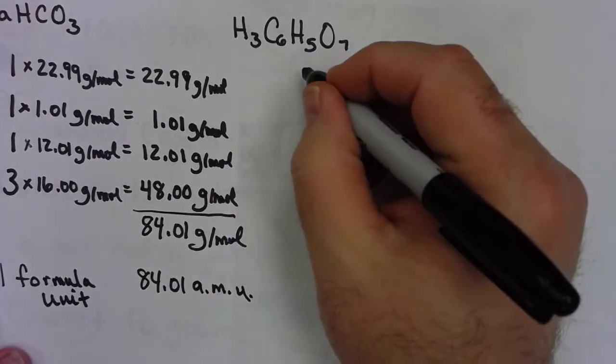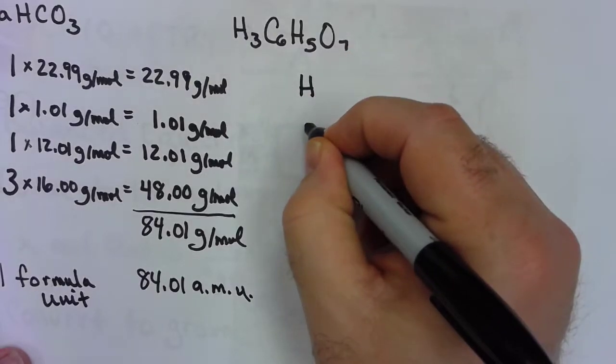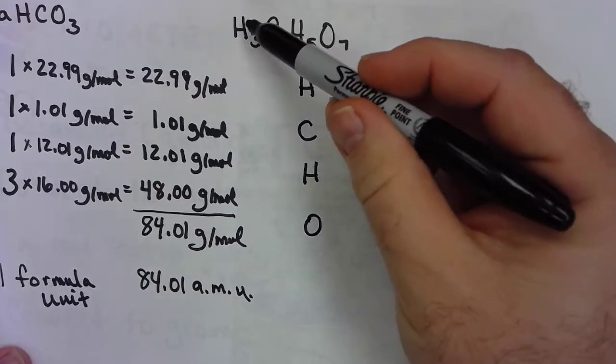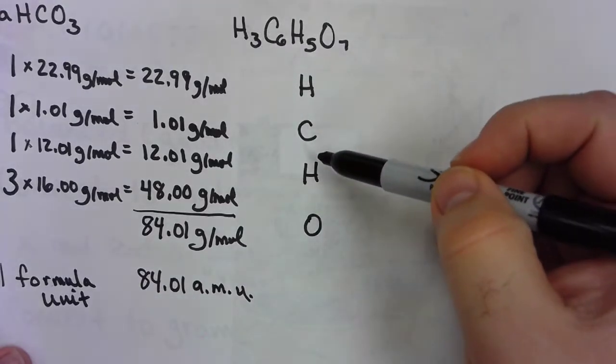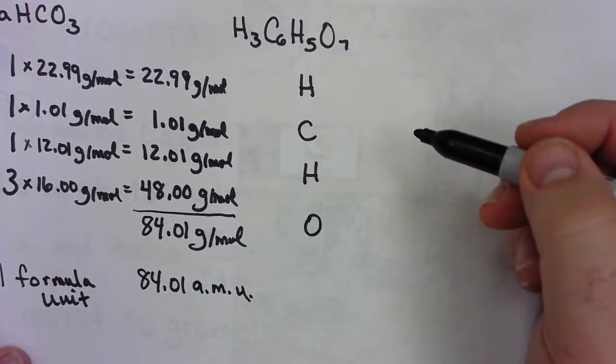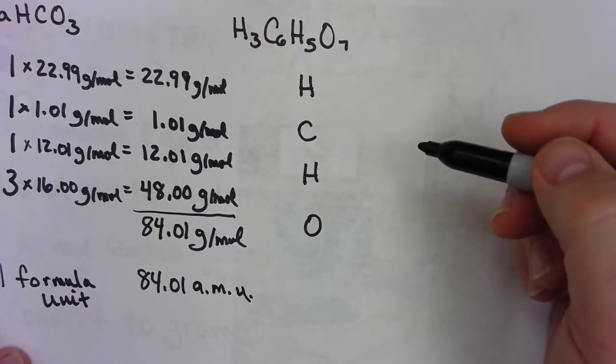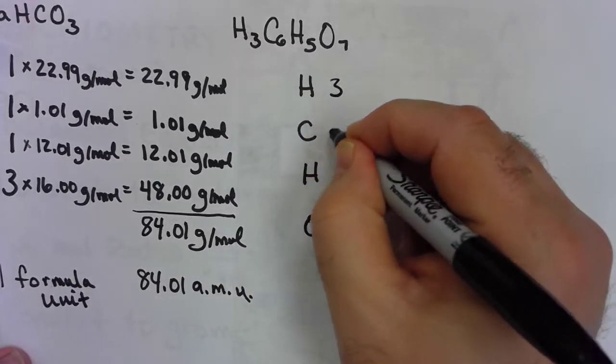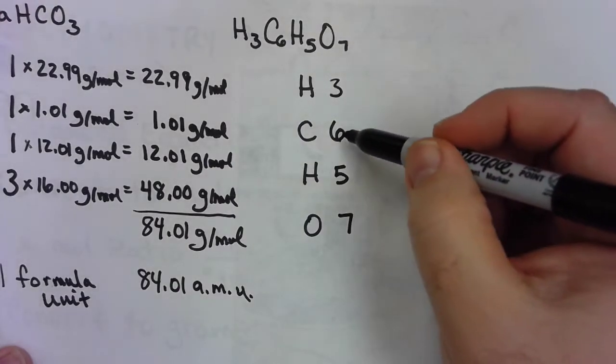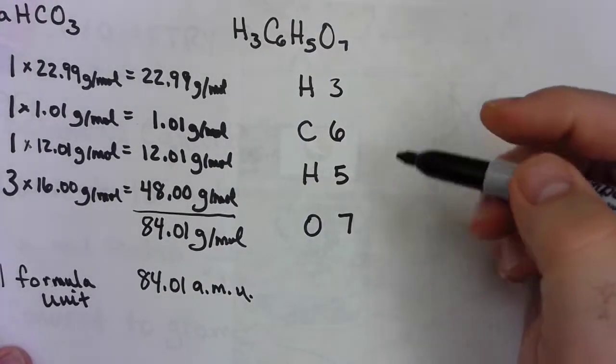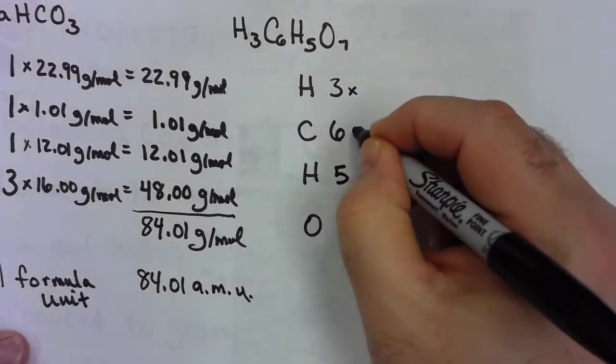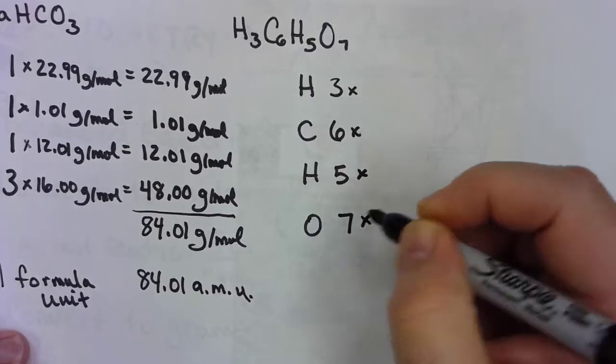The next one here is citric acid. I'm going to make a list of all my elements. I've got hydrogen showing up two places. I can put it separately or I can put them together. It really doesn't matter. A lot of my students will put them separately since they show up separately in the formula. If you want to do 3, 6, 5, 7, that's fine. If you want to go 8, 6, and 7, that'll work also. But for our purposes, I'm going to list them separately. I'm going to find those numbers from the periodic table. They haven't changed.